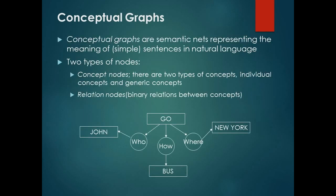Conceptual graphs. Conceptual graphs are semantic nets representing the meaning of simple sentences in natural language. Two types of nodes: Concept nodes, there are two types of concepts - individual concepts and generic concepts. Relation nodes: binary relations between concepts. An example is shown.